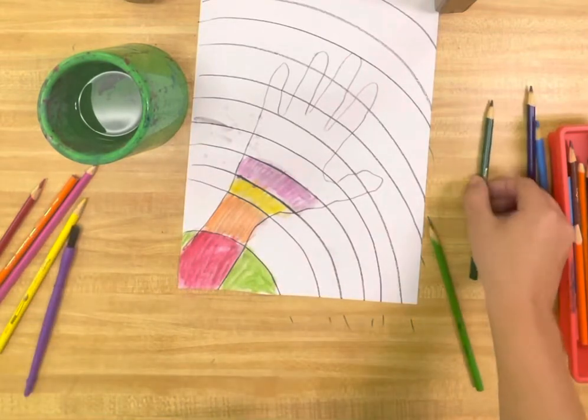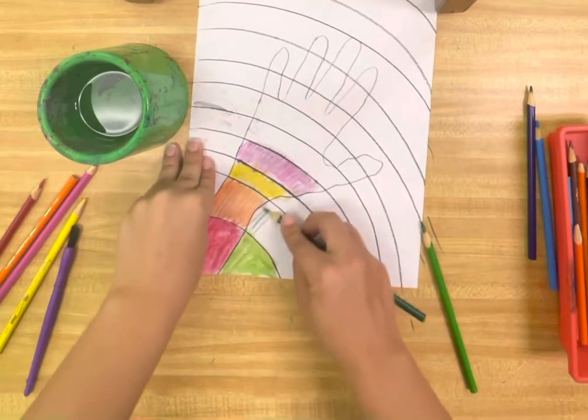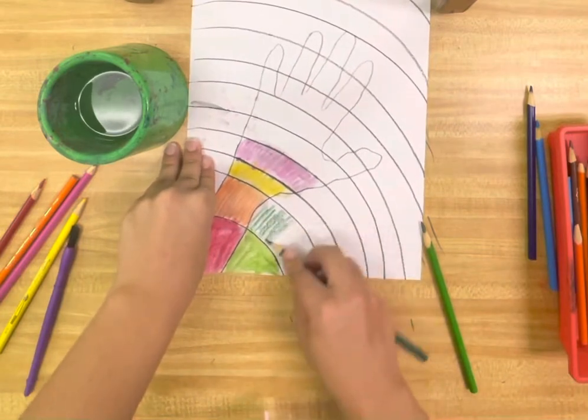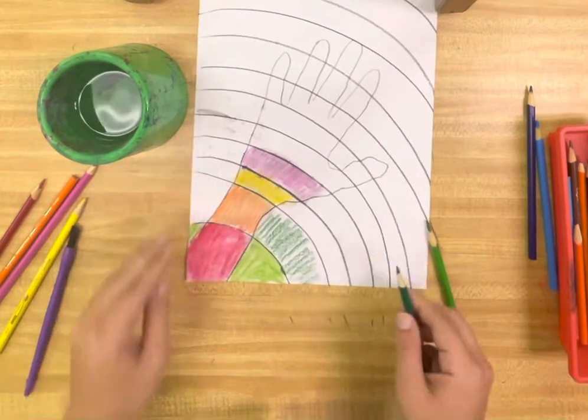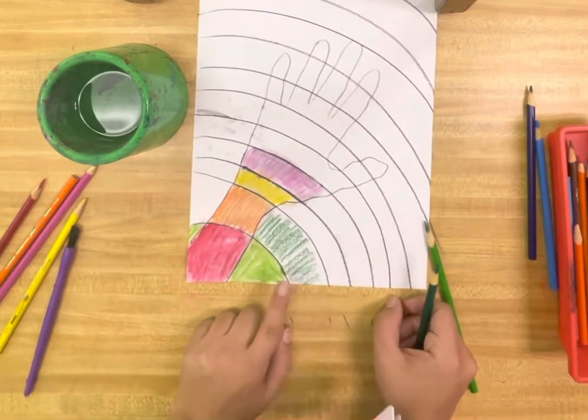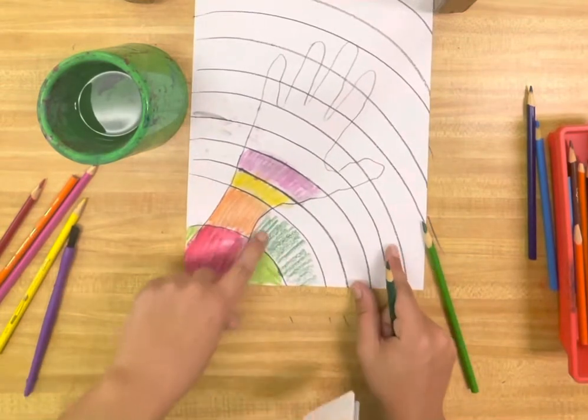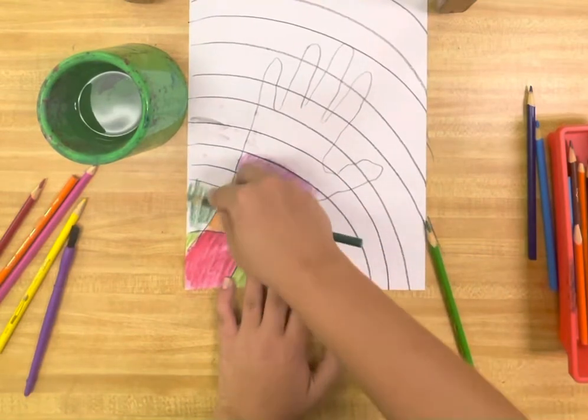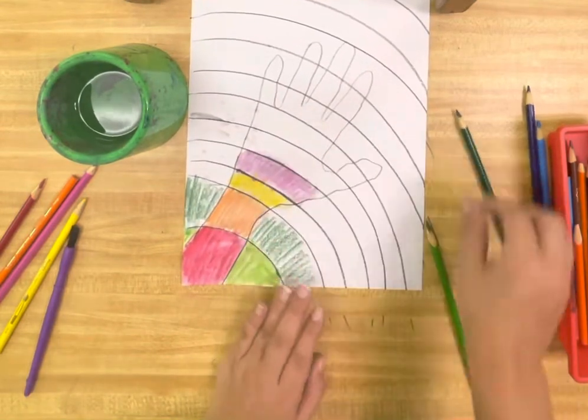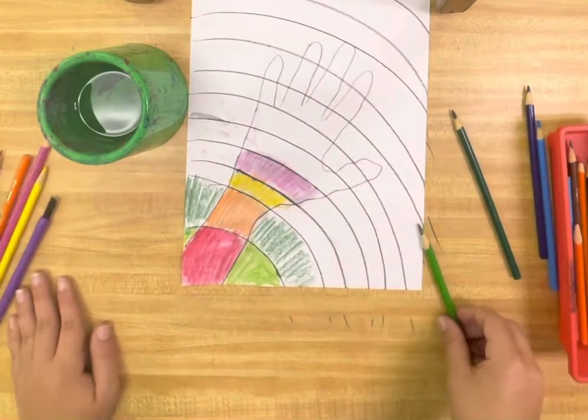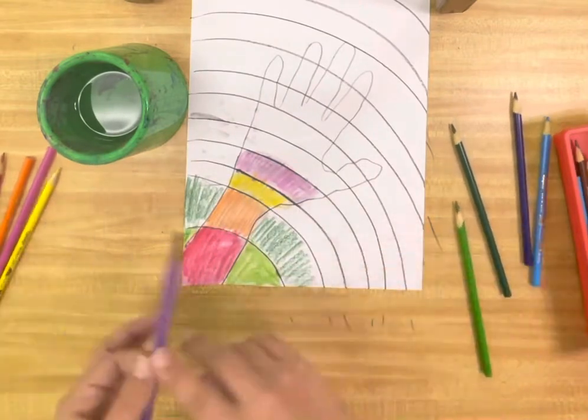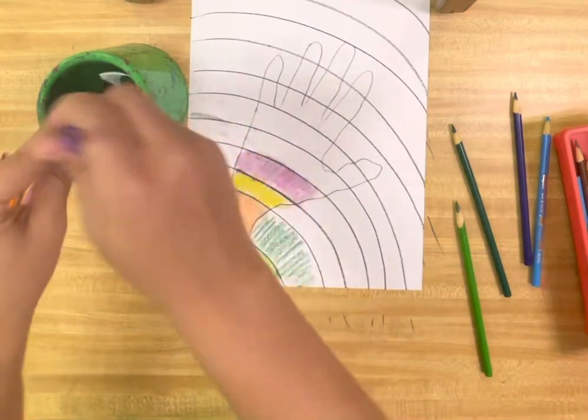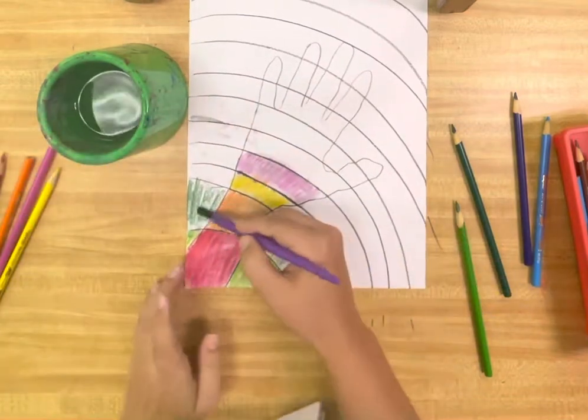And I'm going to use a dark green next. Like this. Now where else would I need to put this dark green? Over here. So kind of follow your curve.